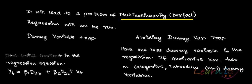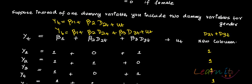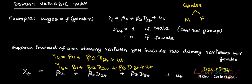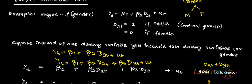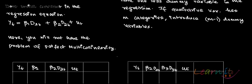Now, how to avoid this problem? One way is that you should have just one less variable for the categories. For example, if you have m categories, you should run the regression for m-1 categories. So one way to avoid the dummy variable trap is this — initially you had just one dummy for one category and you did not include two dummies for both categories.